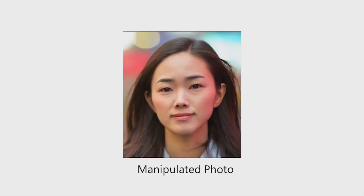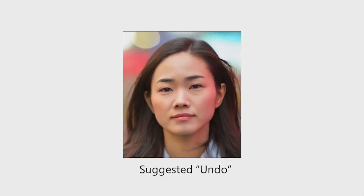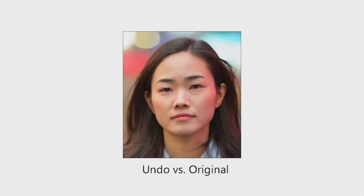For the rest of the video, we'll show results that our model produced using a dataset of photos that were manipulated by a professional artist. Given an input photo, our model predicts the optical flow of the manipulation and shows the predicted flow magnitude. Furthermore, we can even try to reverse the flow estimate and recover what the original image looked like. For comparison, here's the original — let's quickly flip between the manipulated and original, and then our suggested undo and original.